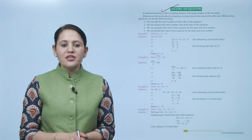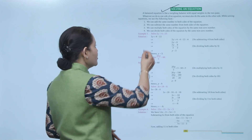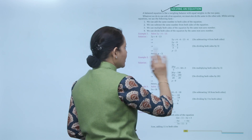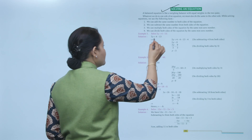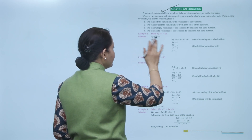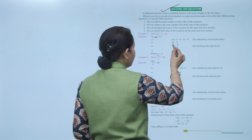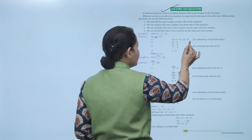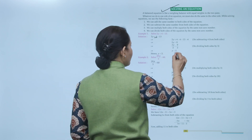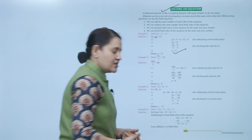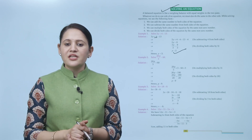Now we will take an example: solve 3y plus 4 equals 13. We need to find the value of y. First we move 4 by subtracting 4 from both sides, giving 3y equals 9. Then y equals 9 upon 3, so y equals 3. This is how we find the value of the variable y.